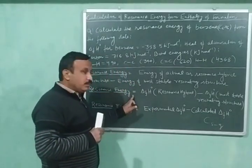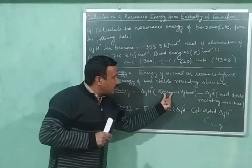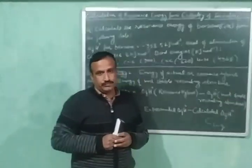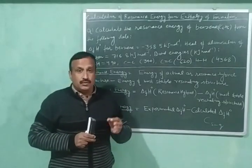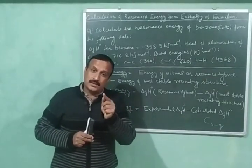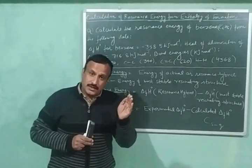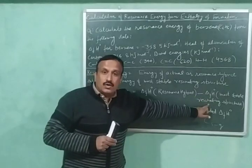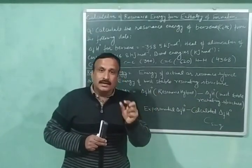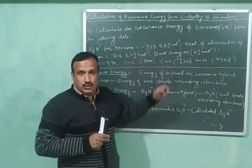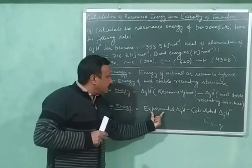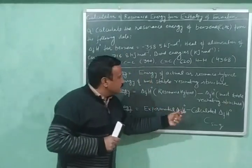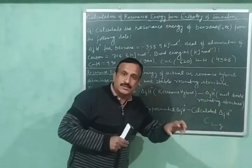The resonance energy will be equal to the standard enthalpy of formation of the resonance hybrid minus the standard enthalpy of formation of the more stable resonating structure. The standard enthalpy of formation determined experimentally is for the resonance hybrid structure, because the compound actually exists in that structure. Whereas the standard enthalpy of formation of the most stable contributing structure is determined theoretically with the help of bond energy data. So resonance energy equals experimental enthalpy of formation minus calculated enthalpy of formation.